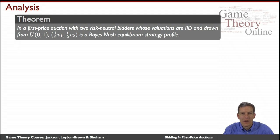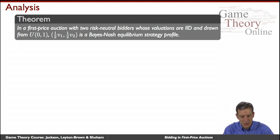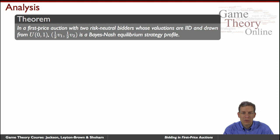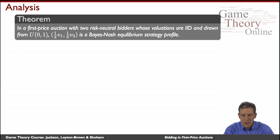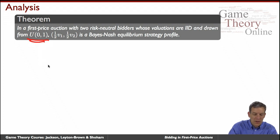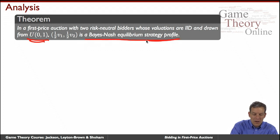Let's look at an equilibrium and verify it, then discuss how to find equilibria in these auctions. Consider a first price auction with a simple case: two bidders, both risk neutral, each getting an independent draw from a uniform distribution on [0,1]. We want to find a Bayesian Nash equilibrium of this game.